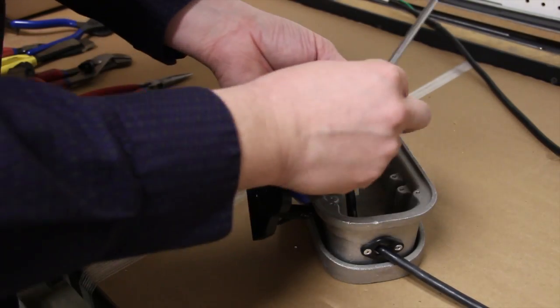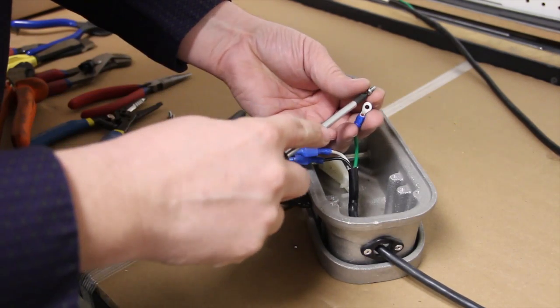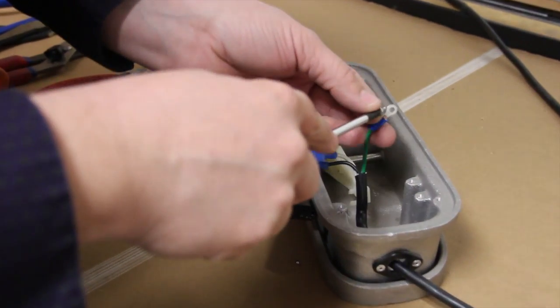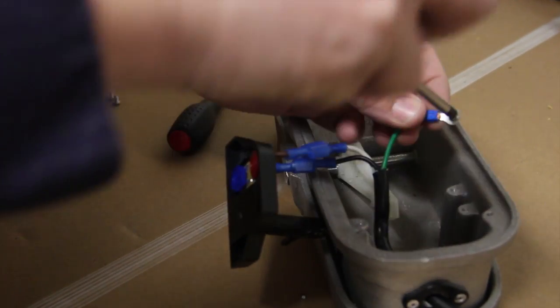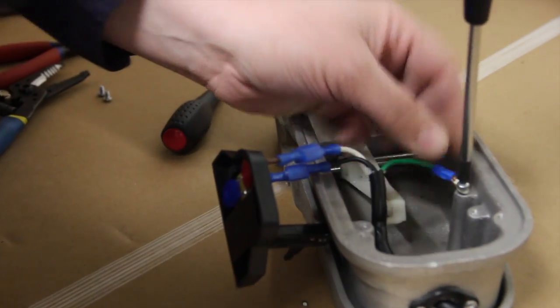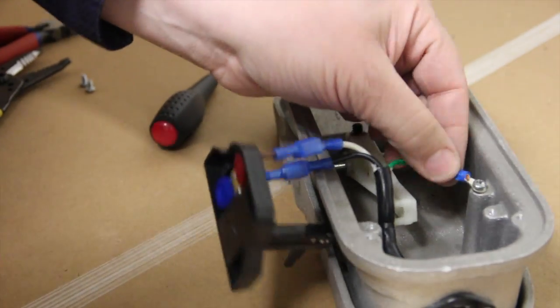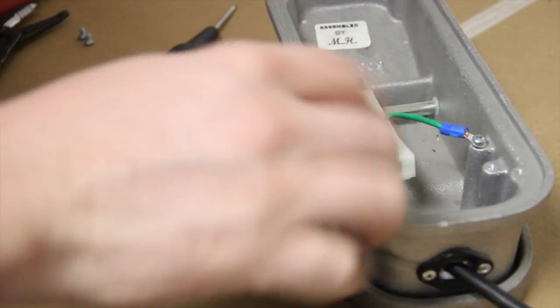We'll go ahead and reinstall the ground. We're going to leave it loose. We want to make sure that it's loose so it can move around while we're trying to finagle our wires back down here.